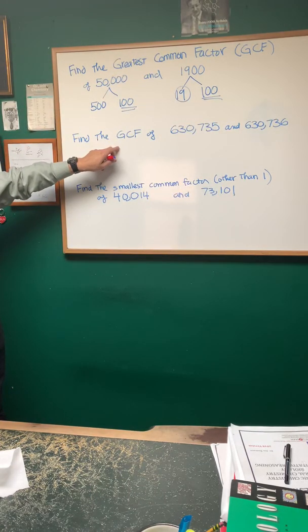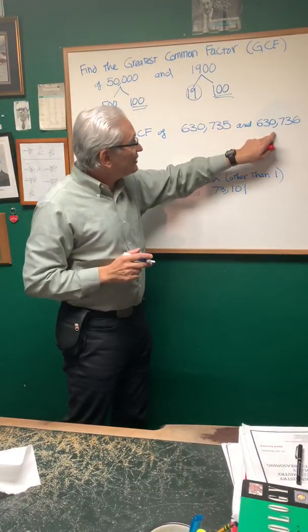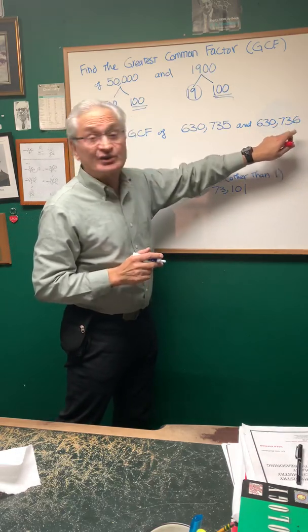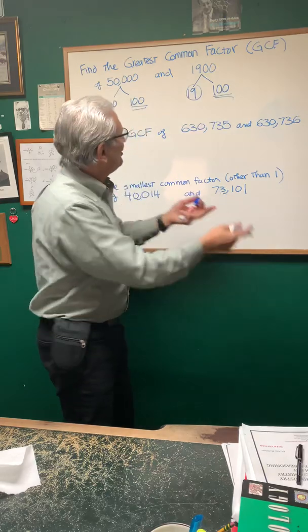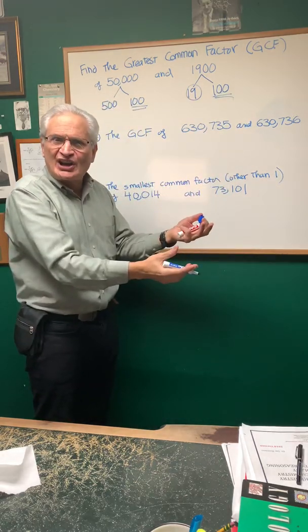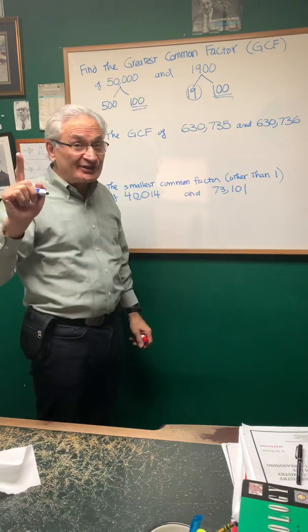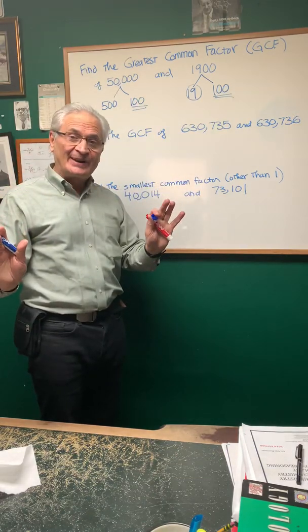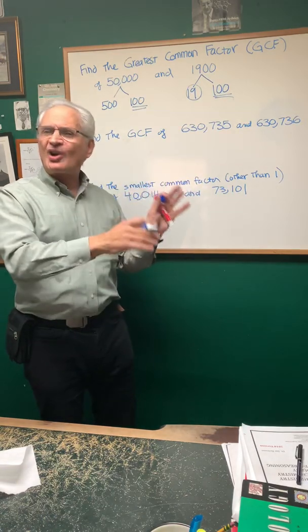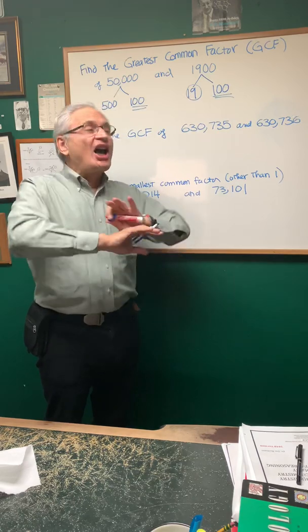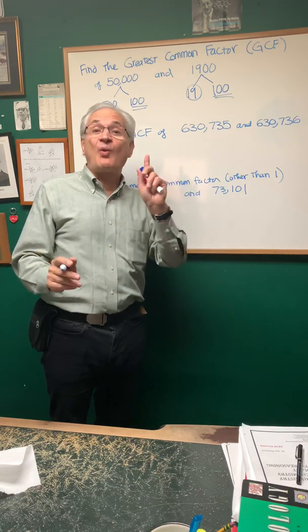Let's move to the next one. Find the greatest common factor of 630,735 and 630,736. If you first look at this, you're going to say you're going to have to find the prime factorization of this huge number — unless you know the secret. There's a secret in number theory that if you have two consecutive numbers, n and n plus 1, the primes in their prime factorization share nothing in common. Their greatest common factor is 1.